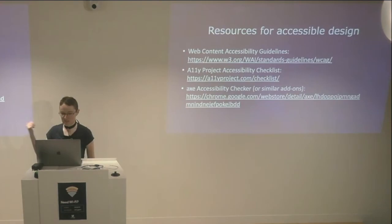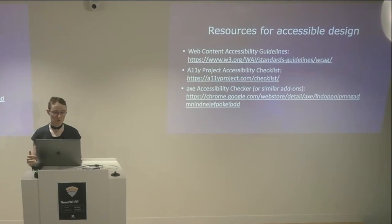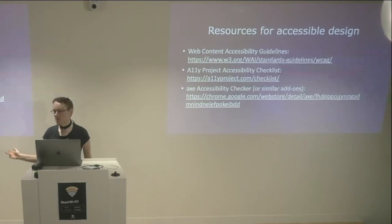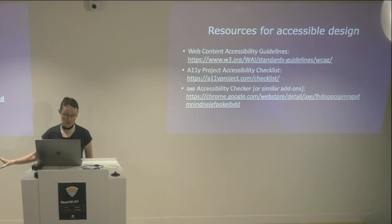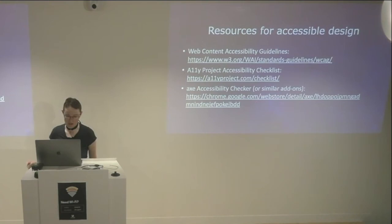If you want to do this, there are a lot of resources out there. The Web Content Accessibility Guidelines are kind of the baseline that everyone goes by. The A11y Project built an accessibility checklist off that — a simpler, easier-to-understand way you can go through and work out whether your website actually meets these guidelines. And if we've got any DevOps people in the room, that can actually be automated into your build pipelines. The axe accessibility checker is the one I've used because it's been around the longest, but there are a number of open-source projects that will allow you to automate as much of the accessibility guidelines as possible.